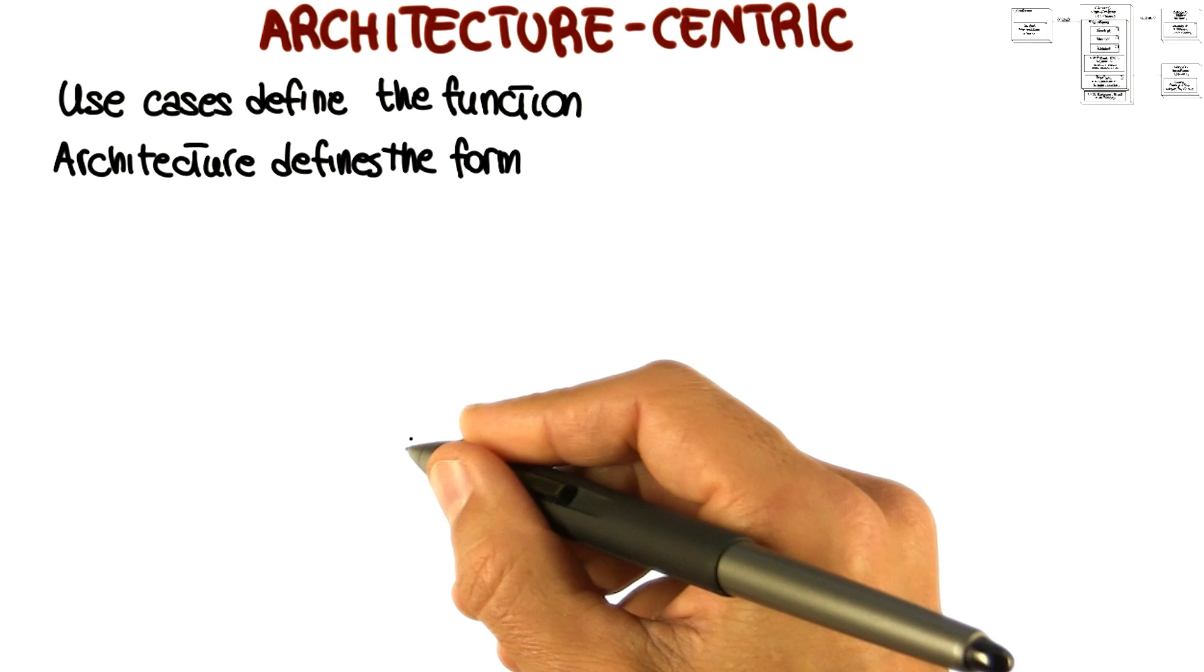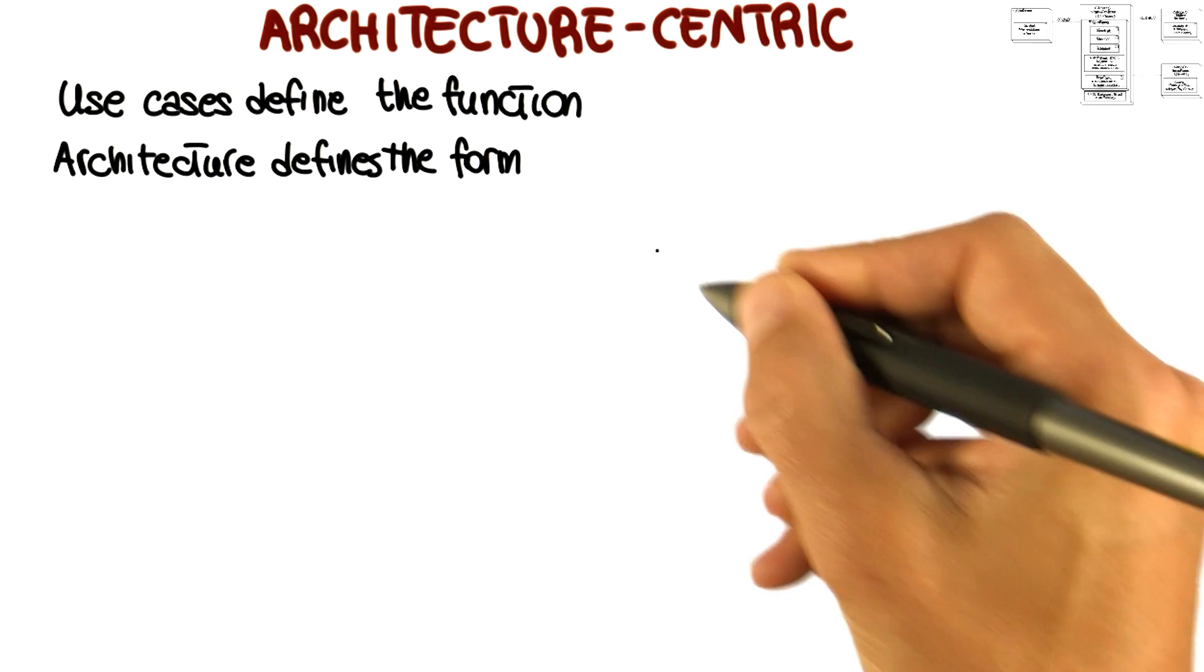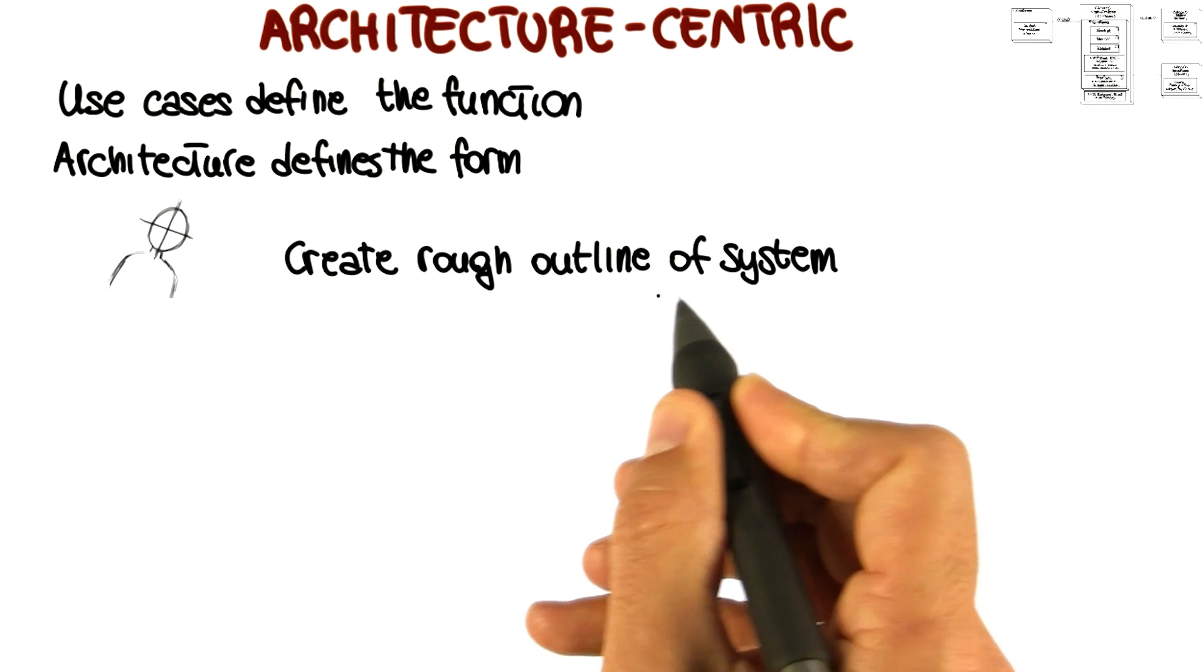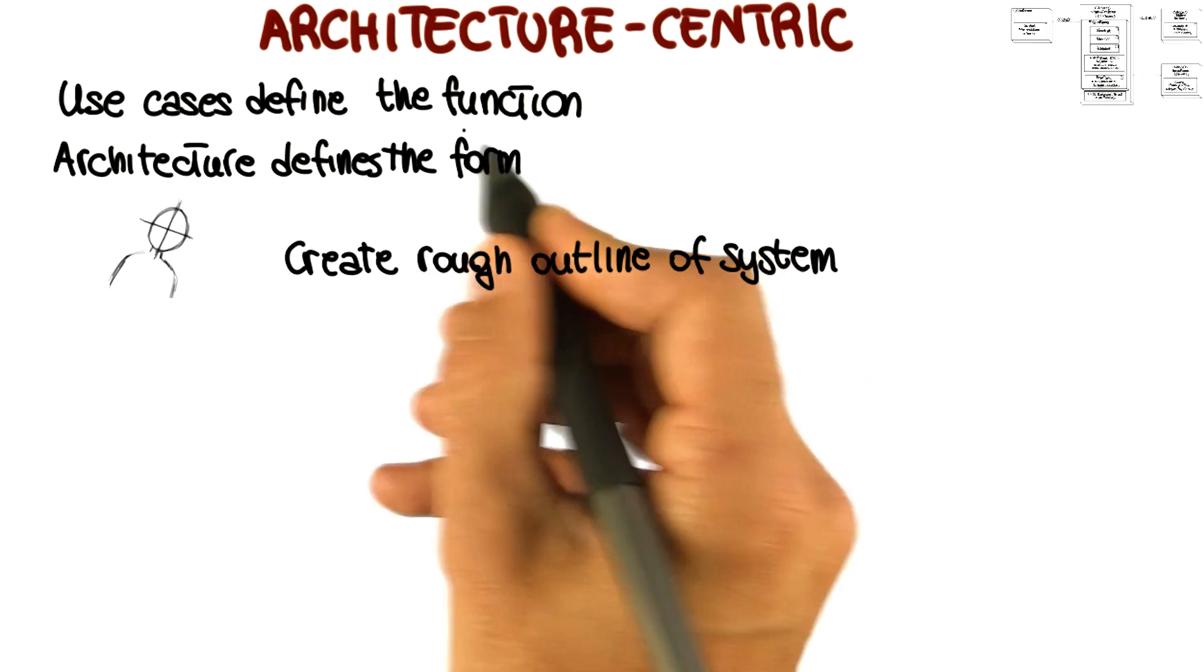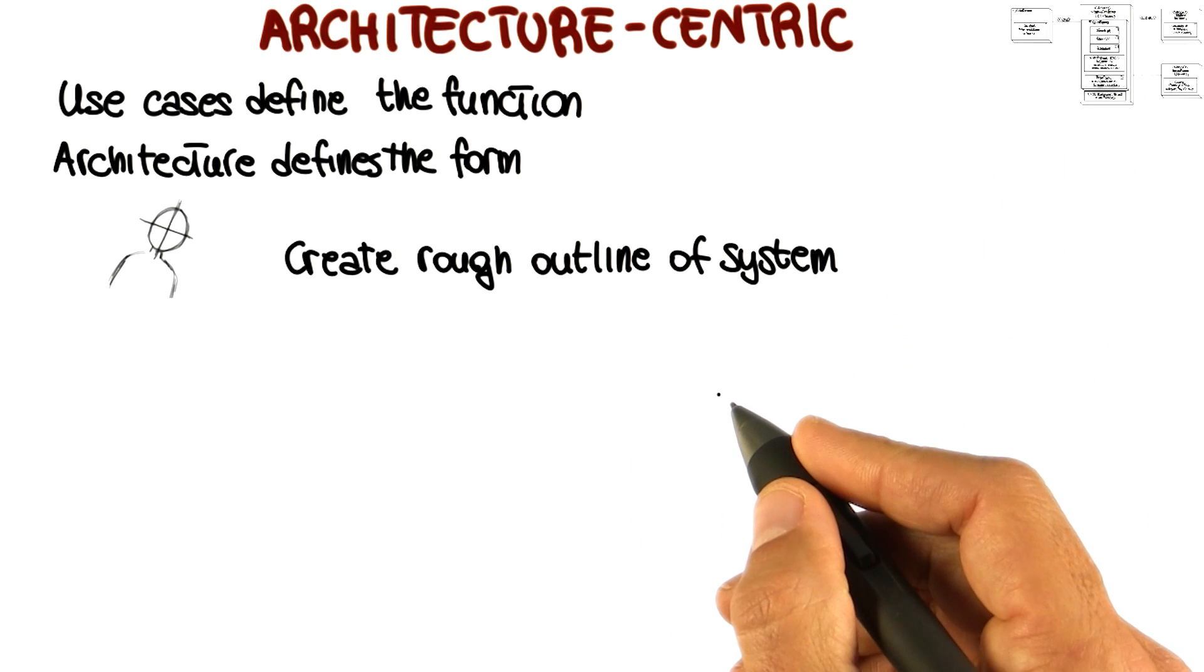So how do we define a software architecture in the Rational Unified Process? Also in this case, this happens through an iterative process. We start by creating a rough outline of the system, and in this case we do it independently from the functionality. So this is just the general structure of the system.